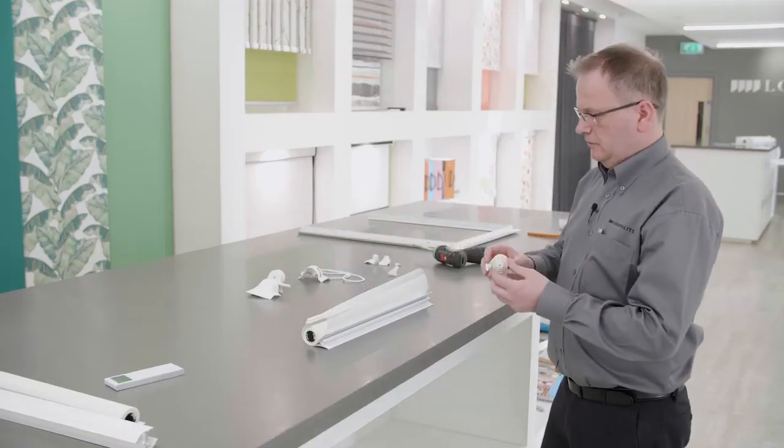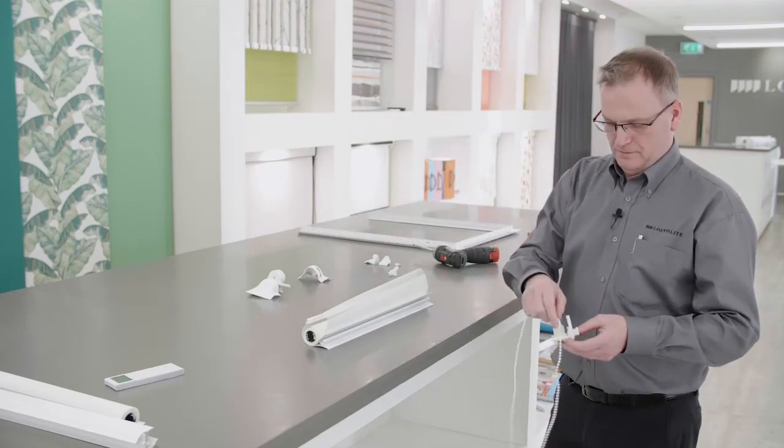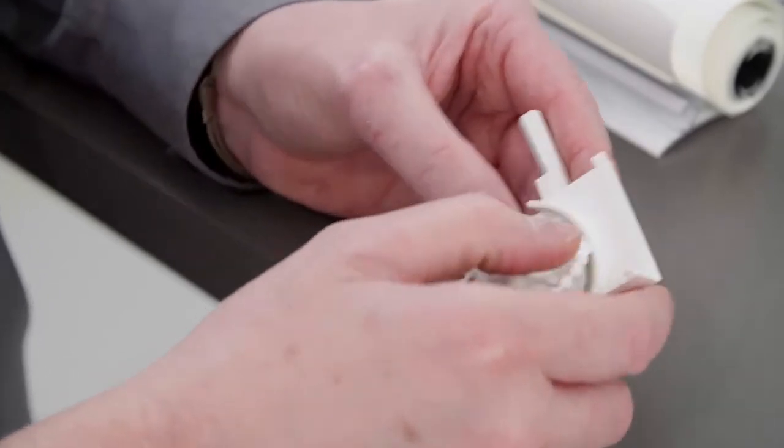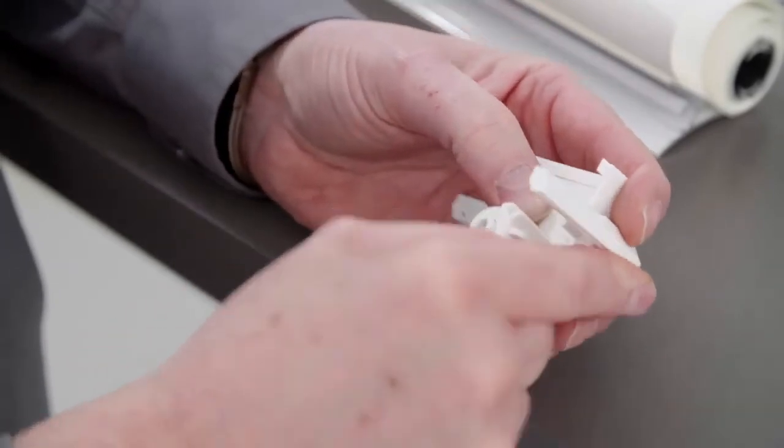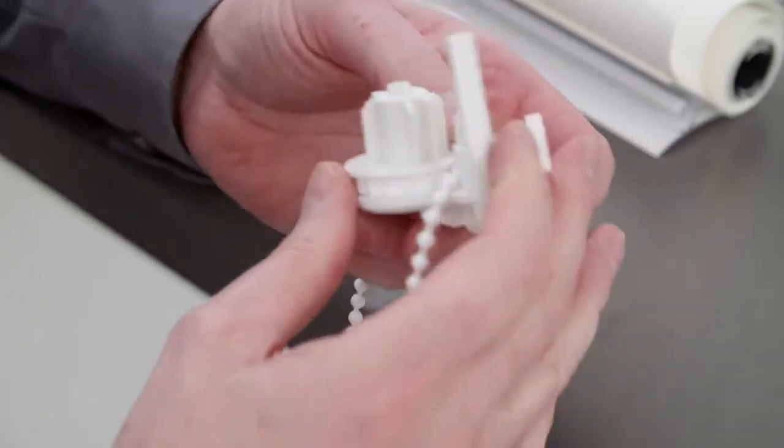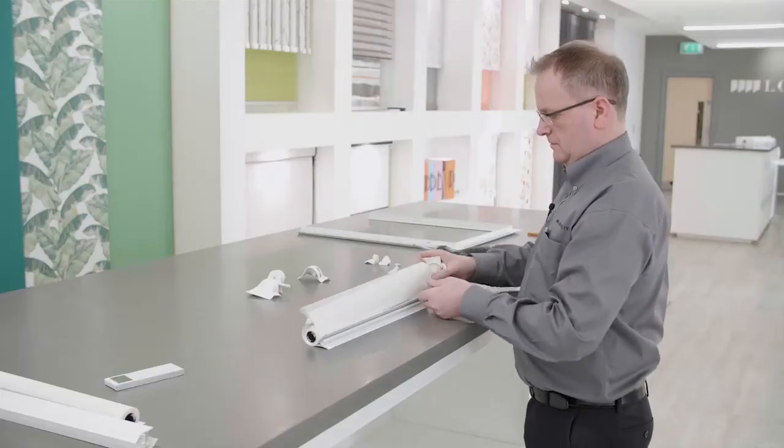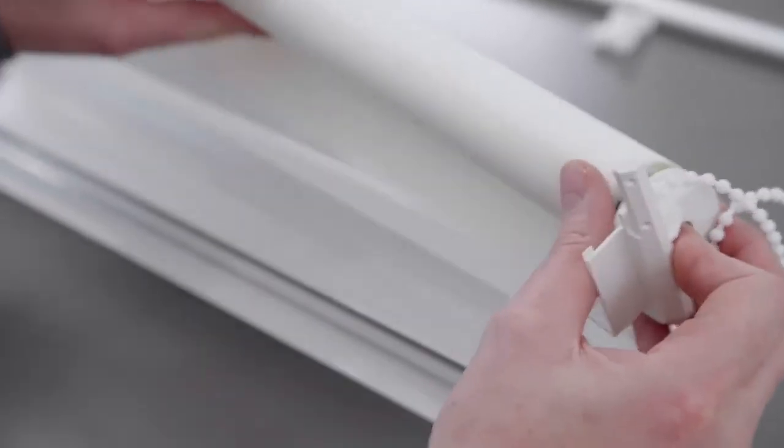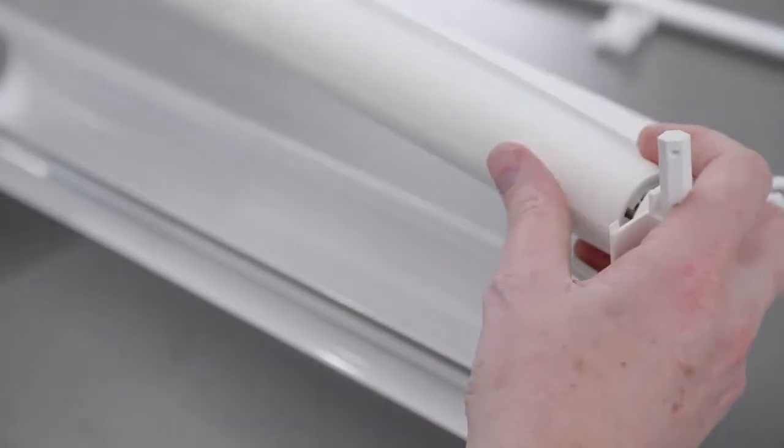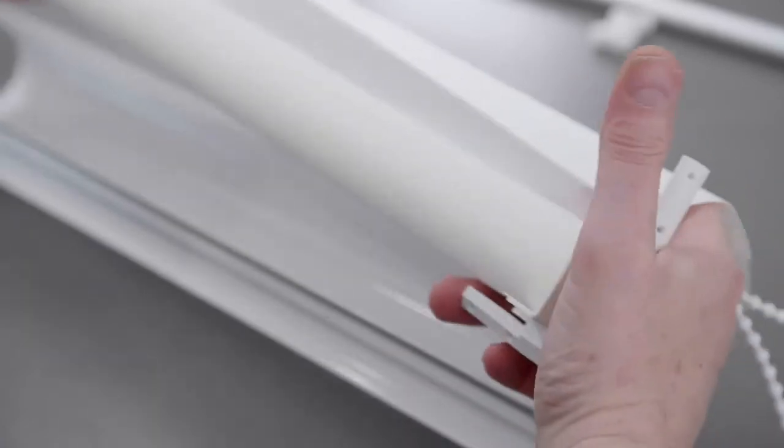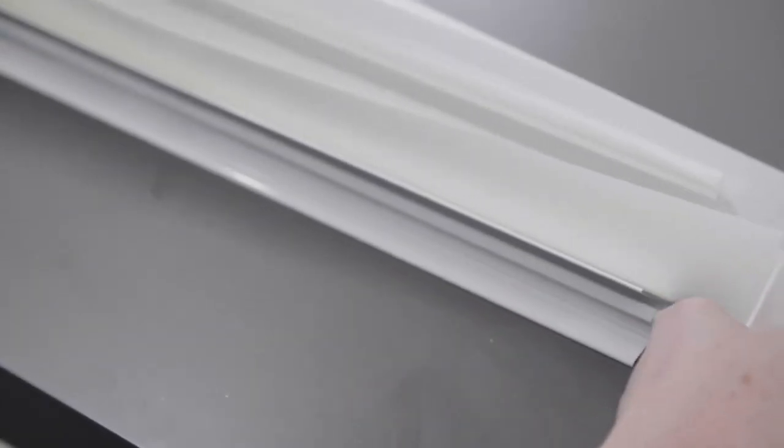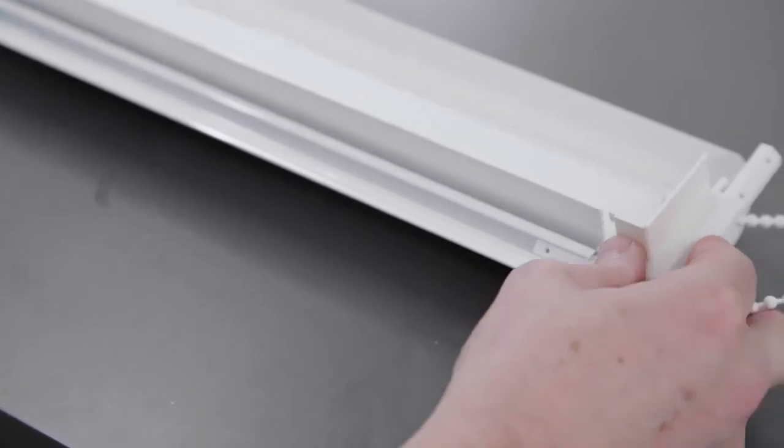Take the roller blind chain control, put the chain on the chain side control. Slide the side control into the Perfect Fit tube and slide the Perfect Fit corner bracket into the channel section.